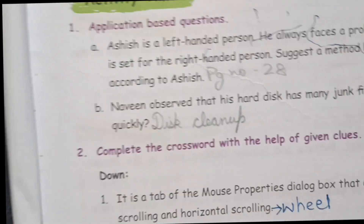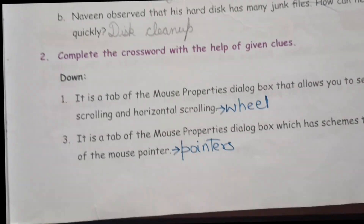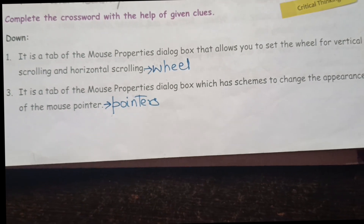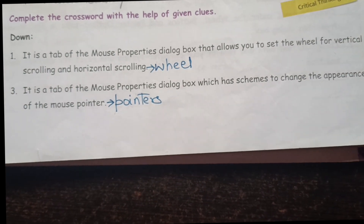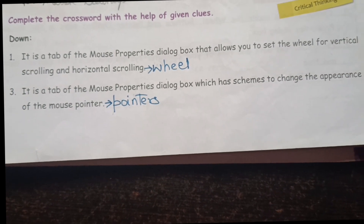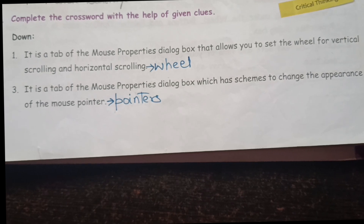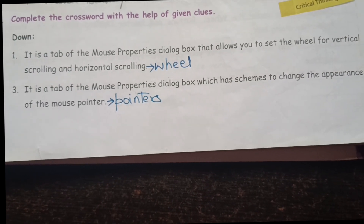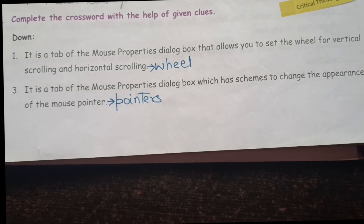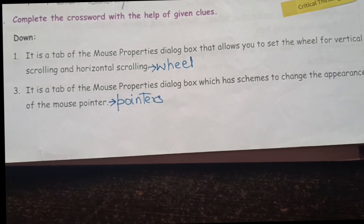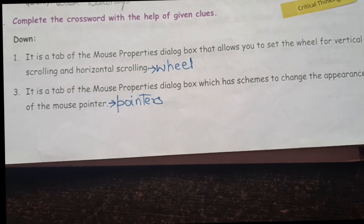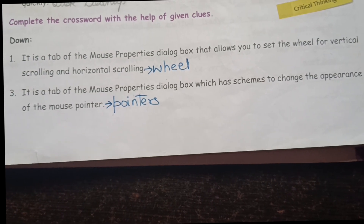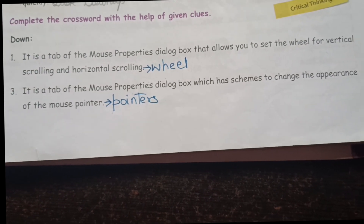Now the crossword puzzle on page 33. First clue: It is a tab of the Mouse Properties dialog box that allows you to set the wheel for vertical and horizontal scrolling — the answer is Wheel. Second clue: It is a tab of the Mouse Properties dialog box which has schemes to change the appearance of the mouse pointer — the answer is Pointers.